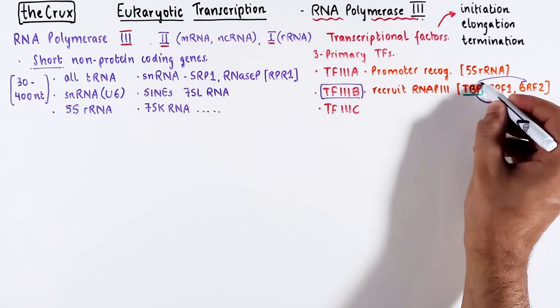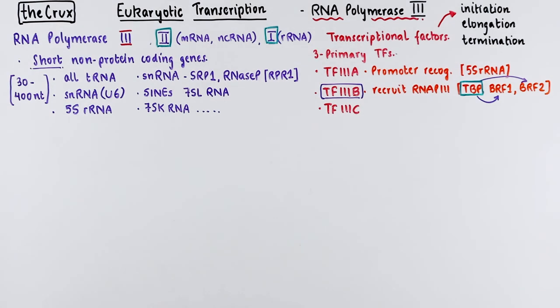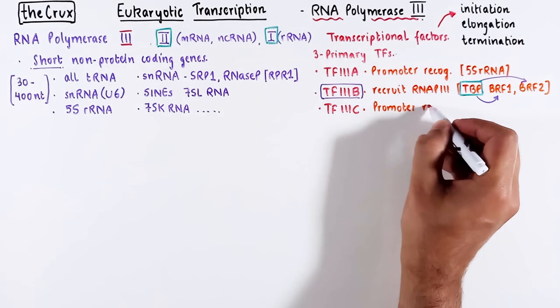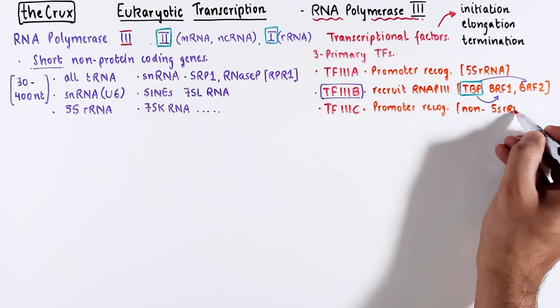It has TBP as well, which you have seen in RNA polymerase 2 and 1 transcription. Finally, TF3C, which plays an important role in recognizing promoters in genes other than 5S ribosomal RNA gene.